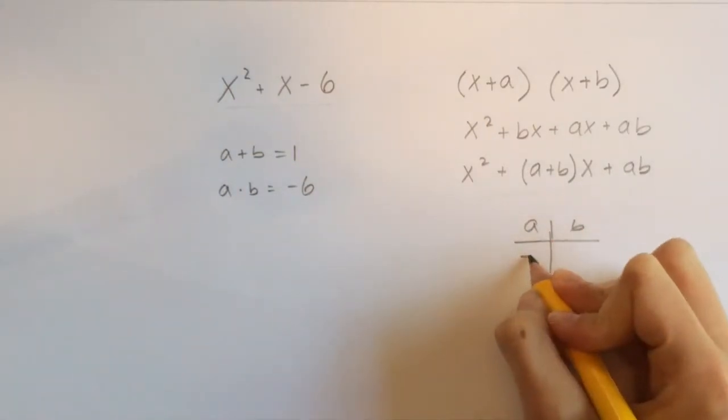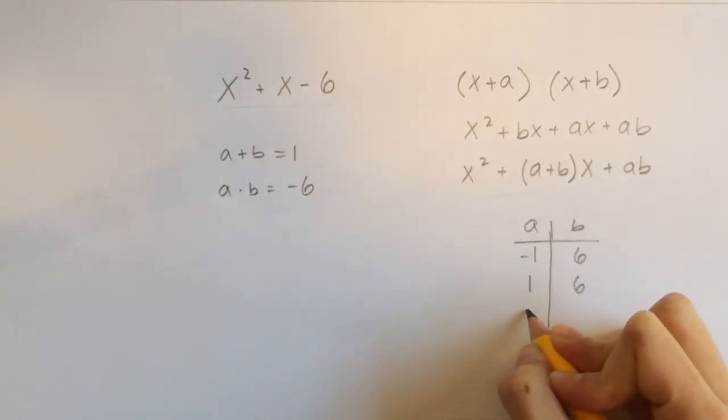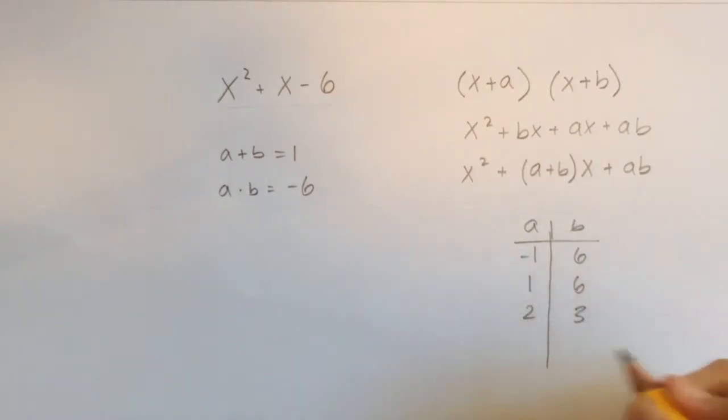Okay, so it could be negative 1 and 6. It could be 1 and negative 6. It could be 2 and negative 3. Or it could be negative 2 and 3.